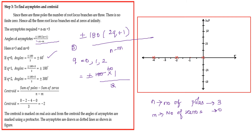For q = 1, the second asymptote is ±180 degrees. For q = 2, the third asymptote is ±180(5)/3 = ±300 degrees. These are the three asymptote angles.